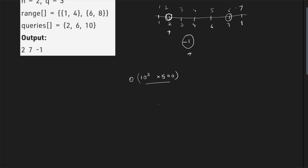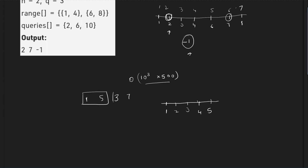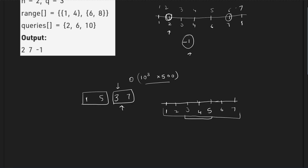Before the solution discussion, there is one more thing to note. There can be overlapping ranges — for example, 1 to 5 and 3 to 7. The first range contributes 1, 2, 3, 4, 5, and the second range also contributes 3, 4, 5, but additionally contributes 6 and 7. The final number line would contain all numbers from 1 to 7. This overlapping case is something you need to take care of.